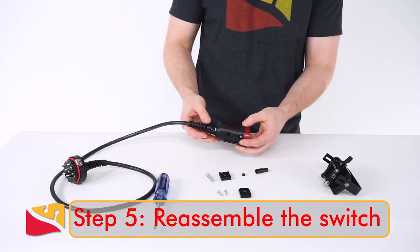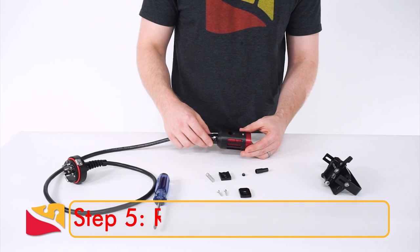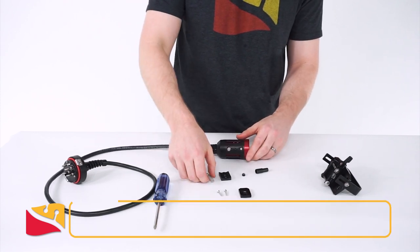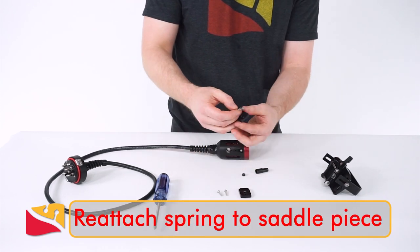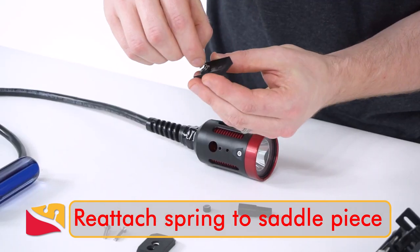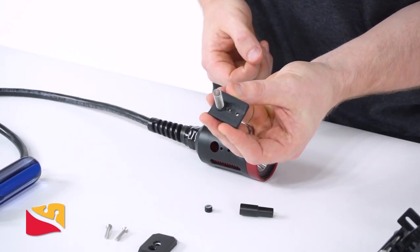Once clean, we can reassemble the switch. To reinstall the switch, first we will reattach the spring to the saddle piece. Simply press it in place in the raised area.